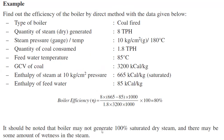Substituting the values: the numerator is 8 tons/hr of steam × (665 − 85) kcal/kg × 1000, and the denominator is 1.8 tons/hr × 3200 kcal/kg × 1000. Calculating this gives a boiler efficiency of 80%.